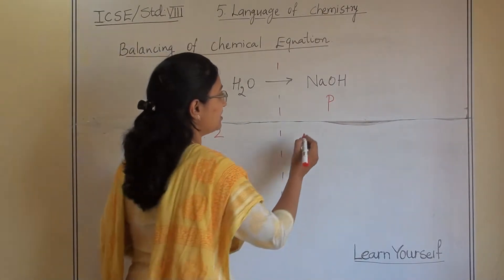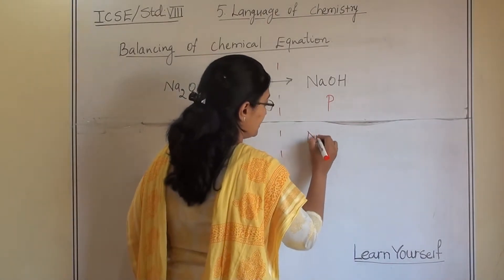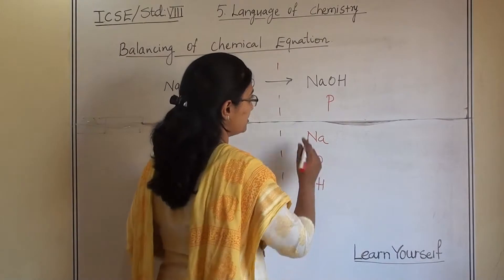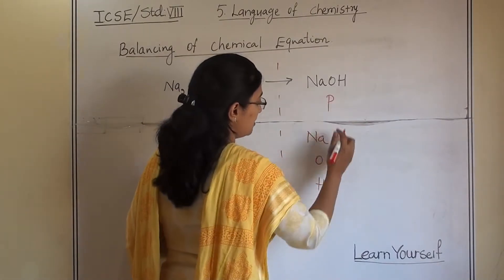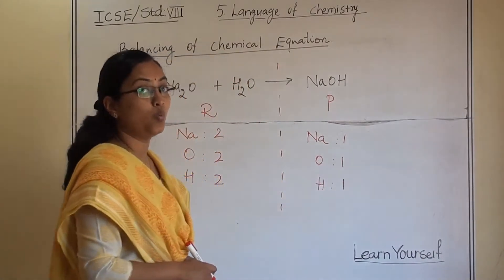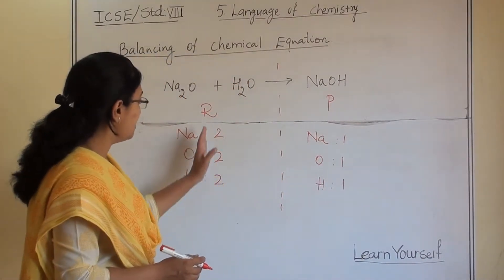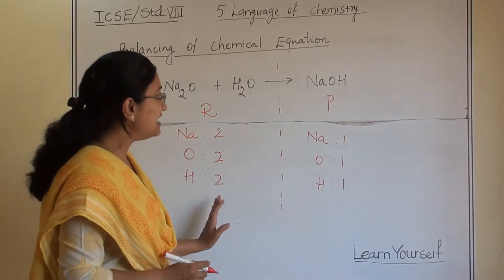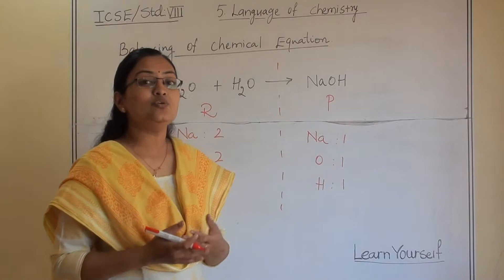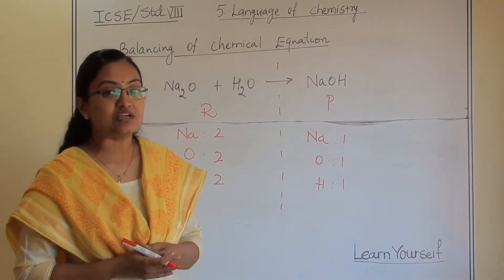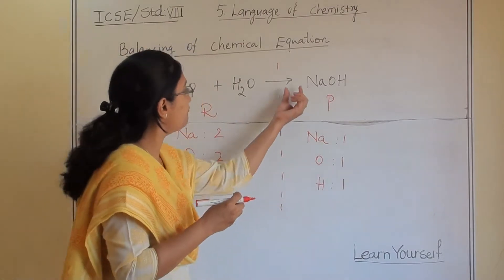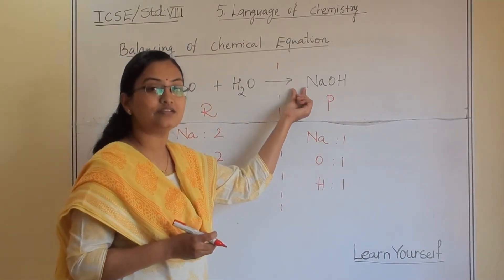Now let us check the product side — NaOH has sodium, oxygen, and hydrogen. Sodium is one, oxygen is one, and hydrogen is one. So if you compare, all atoms are double on the reactant side compared to the product side. When balancing a chemical equation, you have to add a certain number — a coefficient — to the front of any reactant or product.